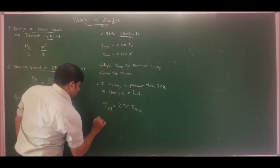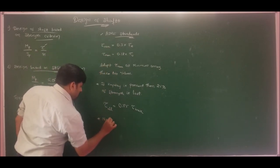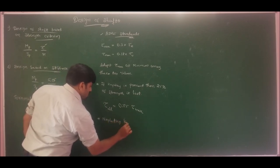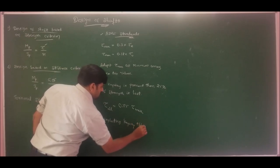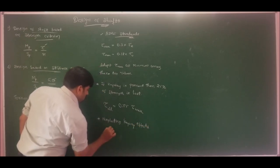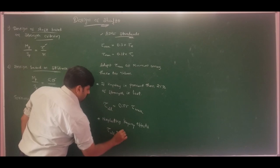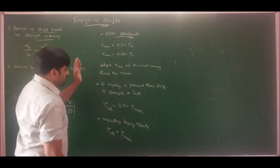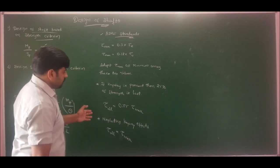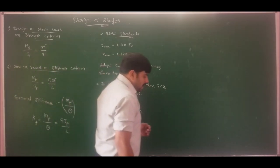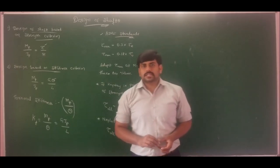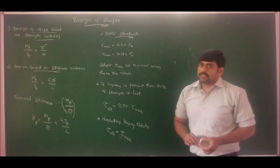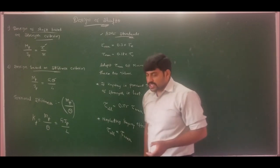If we neglect keyway effects, then τ_allowable equals τ_max. Based on these values, we determine the allowable shear stress permissible for the given power transmission conditions, and from that we determine the diameter of the shaft.